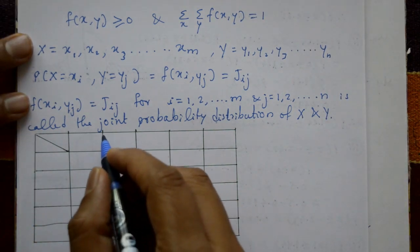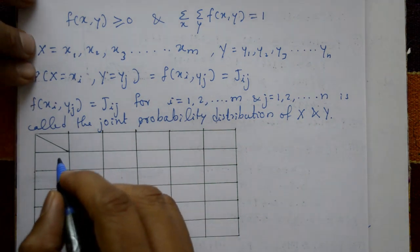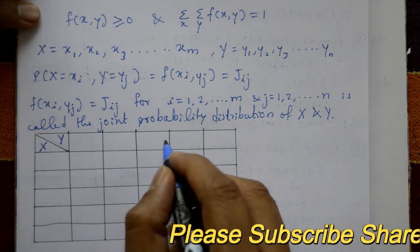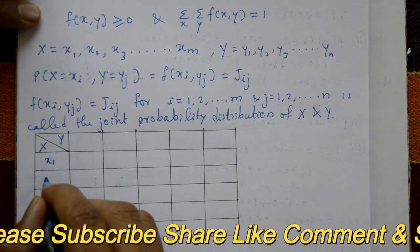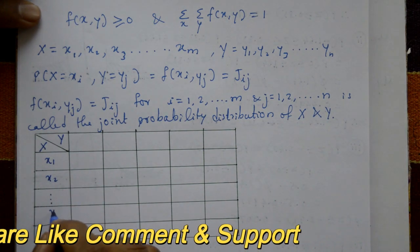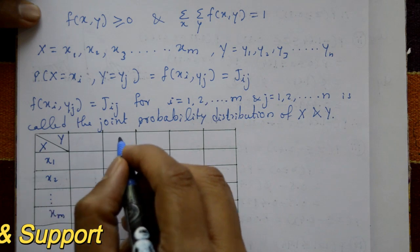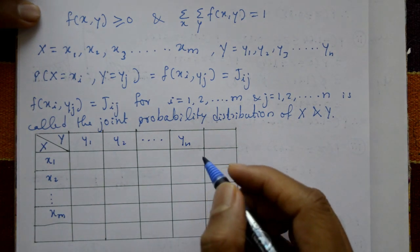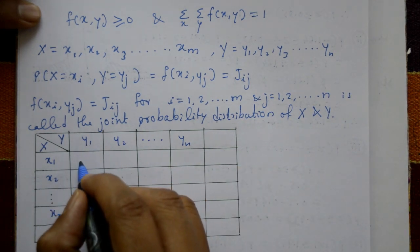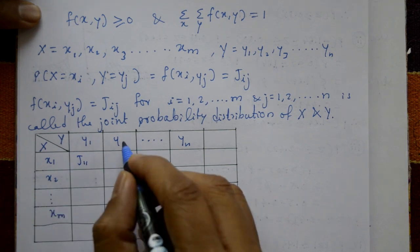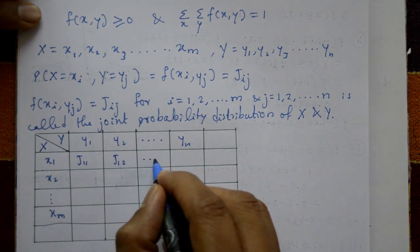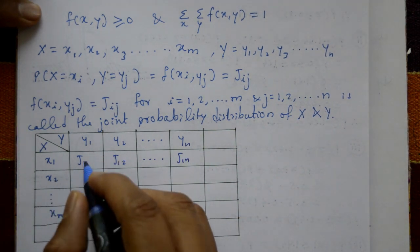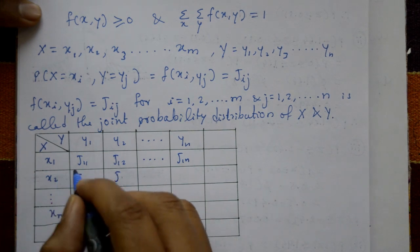This is called the joint probability distribution of X and Y. The joint probability distribution table has capital X arranged column-wise and capital Y arranged row-wise. X1, X2, ... XM are the columns and Y1, Y2, ... YN are the rows. So X1, Y1 gives J11; X1, Y2 gives J12; and so on up to X1, YN gives J1N.